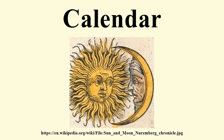Periods in a calendar are usually, though not necessarily, synchronized with the cycle of the sun or the moon. The most common type of pre-modern calendar was the lunisolar calendar — a lunar calendar that compensates by adding an intercalary month to remain synchronized with the solar year over the long term.